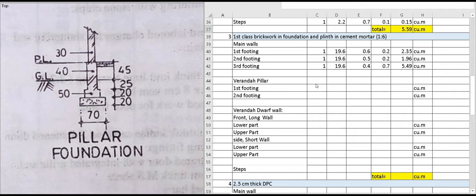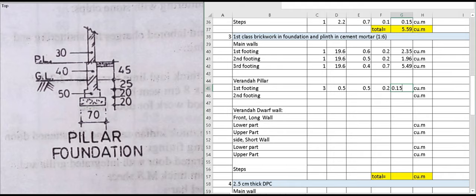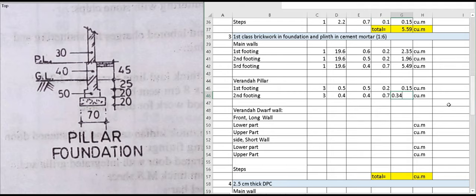For the veranda pillars, there are three in number. The first footing is 0.5 by 0.5 meter with height 0.2 meter, giving 0.15 cubic meter. The second footing is 0.4 by 0.4 meter with height 0.45 plus 0.25 equals 0.7 meter, giving 0.34 cubic meter.